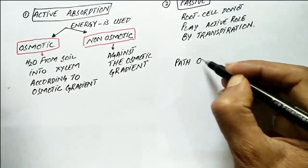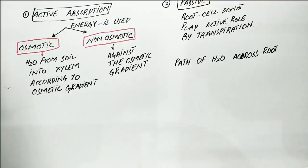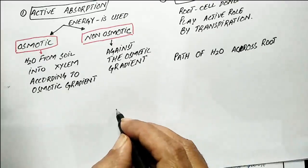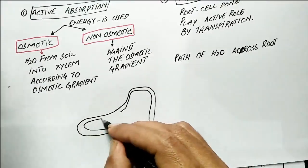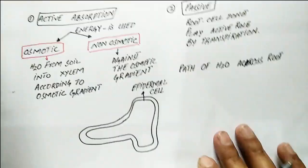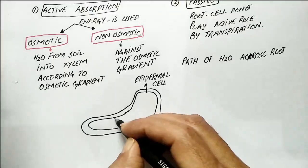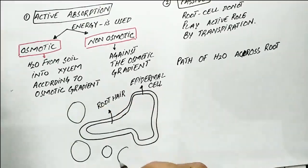When we trace the pathway of water movement across the root, we find that water moves across the root by apoplast through the cell walls, symplast through the cytoplasm, and vacuolar pathways.